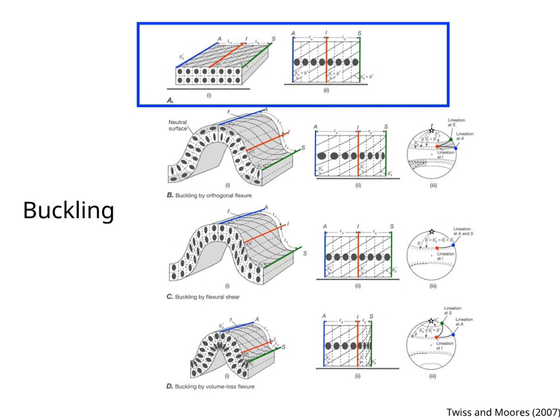In buckling, the layer is homogeneously shortened by layer parallel compression before folding. The angle that the lineation makes with the fold axis is beta prime.